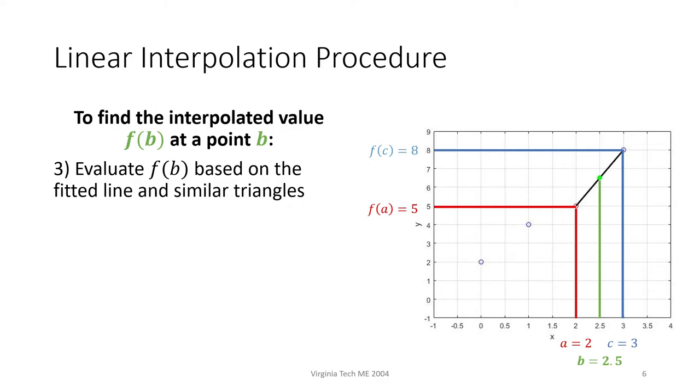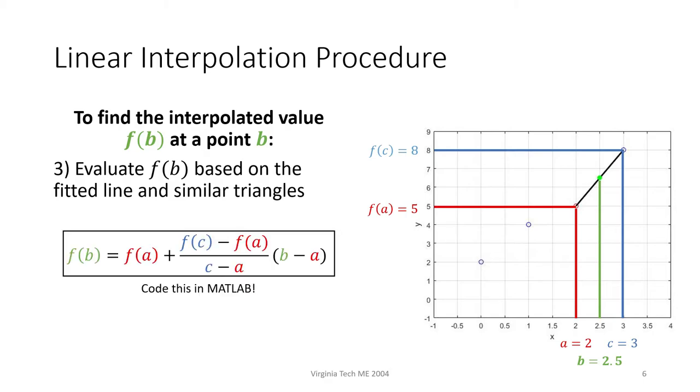After we've drawn the line, we use similar triangles to find f(b). I won't go through all the math here, but you end up with this equation, which can be easily implemented into MATLAB. If you plug in all the values, you end up with f(b) equals 6.5. This turns out to be the average of f(a) and f(c), which should make sense because b is the average of a and c.